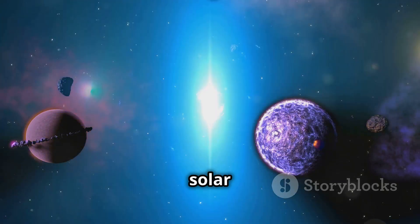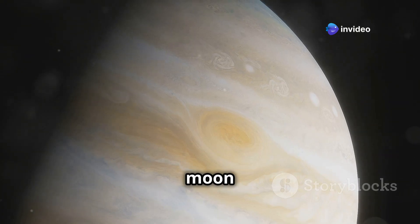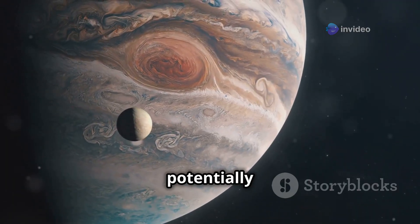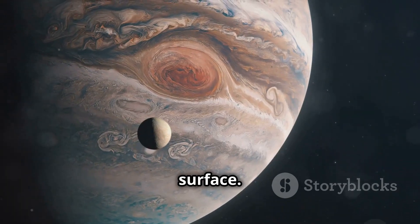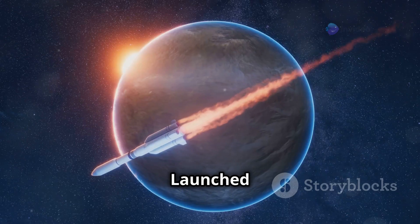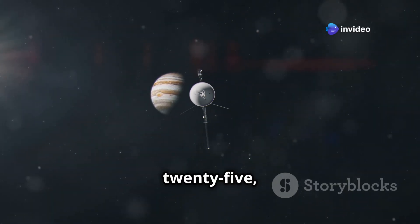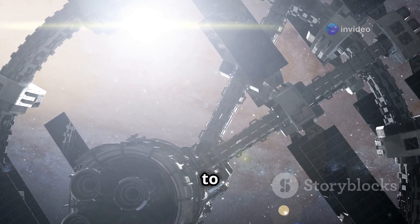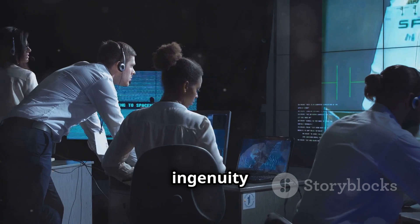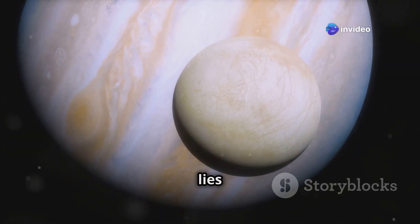Next up we journey to the outer solar system where a fascinating world awaits our exploration. Jupiter's moon Europa, a celestial body shrouded in ice and mystery, is believed to harbor a vast, potentially life-supporting ocean beneath its frozen surface. And that's where NASA's Europa Clipper mission comes in. Launched in late 2024, the Europa Clipper will be hitting its stride in 2025, using Earth's gravity to slingshot itself towards Jupiter. Scientists believe that beneath its icy shell lies an ocean that could contain more water than all the oceans on Earth combined.